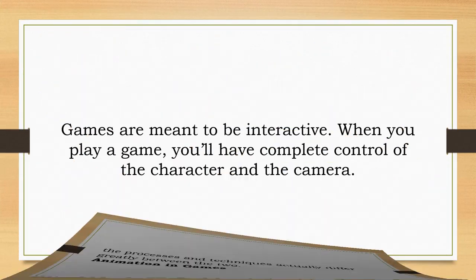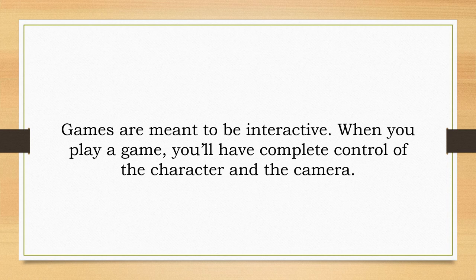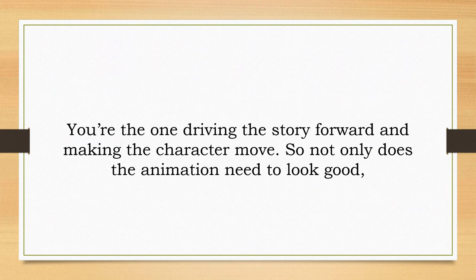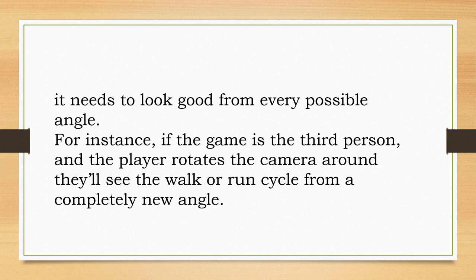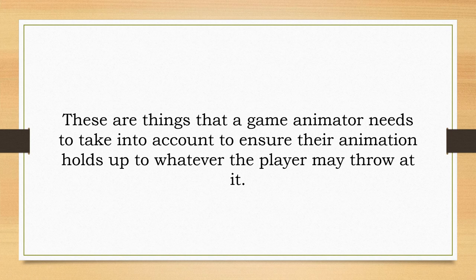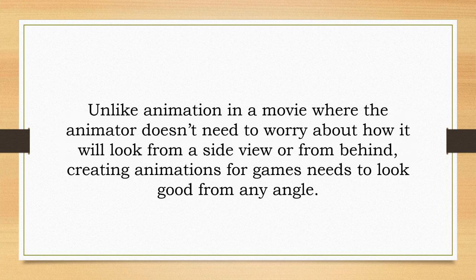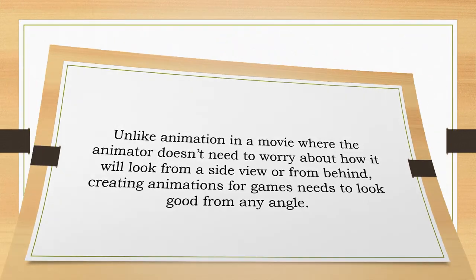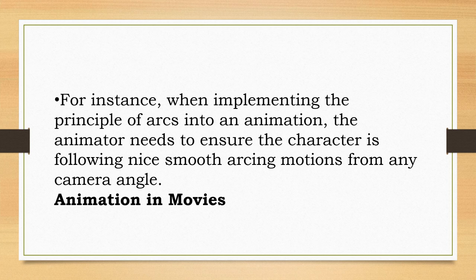Animation in Games: Games are meant to be interactive. When you play a game, you have complete control of the character and the camera. You're the one driving the story forward and making the character move. So not only does the animation need to look good, it needs to look good from every possible angle. For instance, if the game is third person and the player rotates the camera, they'll see the walk or run cycle from a completely new angle. This new angle can reveal things like knee pops that may not have been visible in the normal camera view. These are things a game animator needs to take into account. Creating animations for games needs to look good from any angle — when implementing the principle of arcs, the animator must ensure the character follows smooth arcing motions from any camera angle.